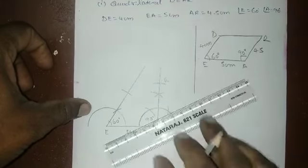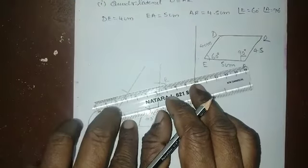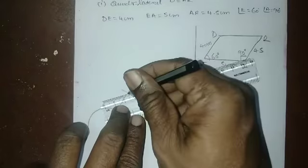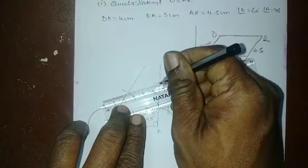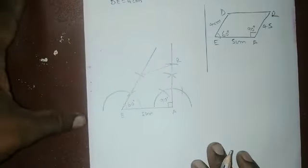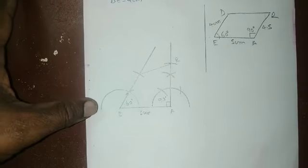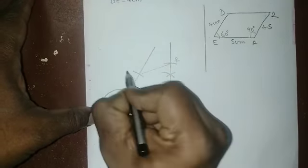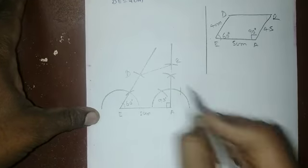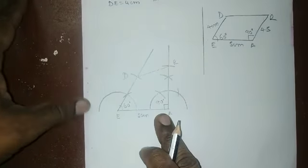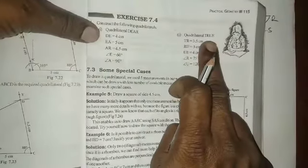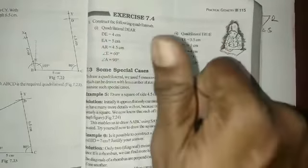Now we have to join these two points. Join them and the quadrilateral DEAR is formed. I think you have understood this construction. In the next class, we are going to construct another quadrilateral called TRUE. Thank you.